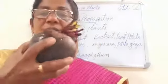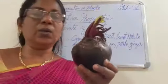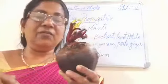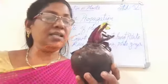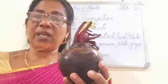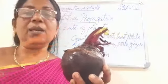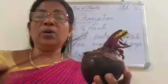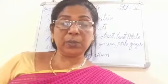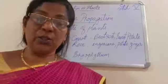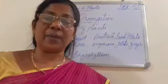Another example is beetroot. Beetroot is also the root of a plant. When we bury beetroot in the soil, it also grows stems and leaves and can become a new plant. Similarly, sweet potato is also a root which grows into a new plant from its root.